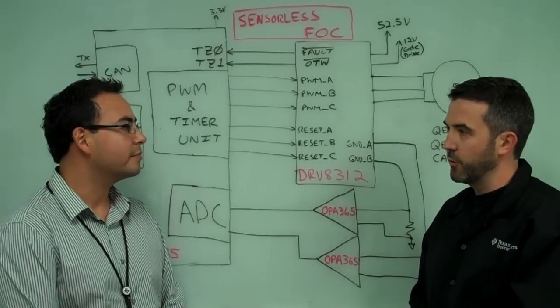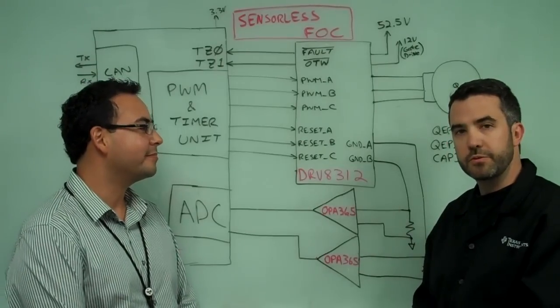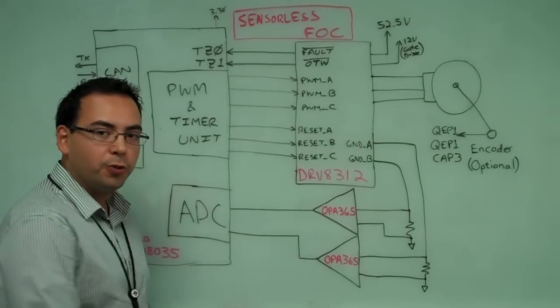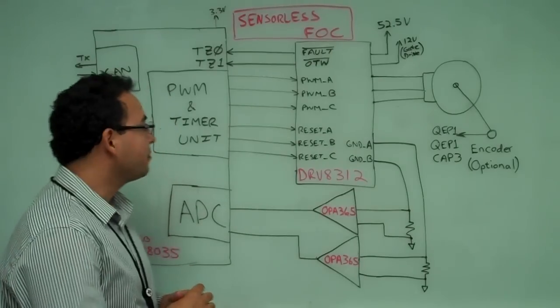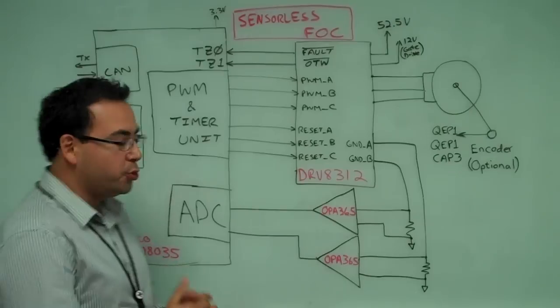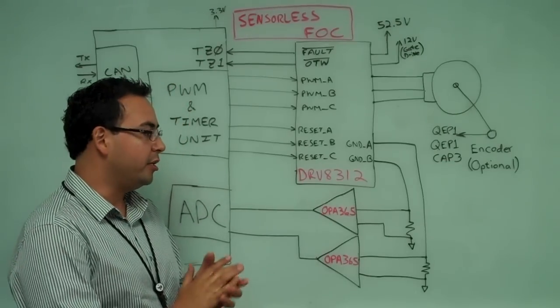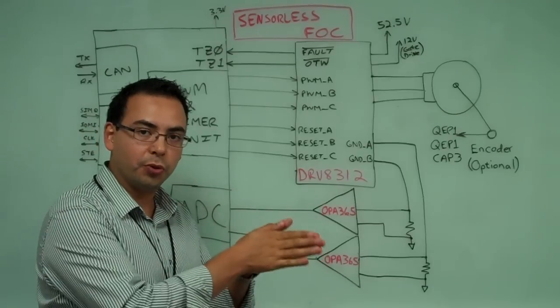Now I'm going to pass it over to Jorge to tell us a little bit more about the complete solution. Alright, thanks Ryan. Okay, so what we're trying to do is field oriented control. And in order to do that, we need current feedback from the motor and we need a few PWMs to control the motor.